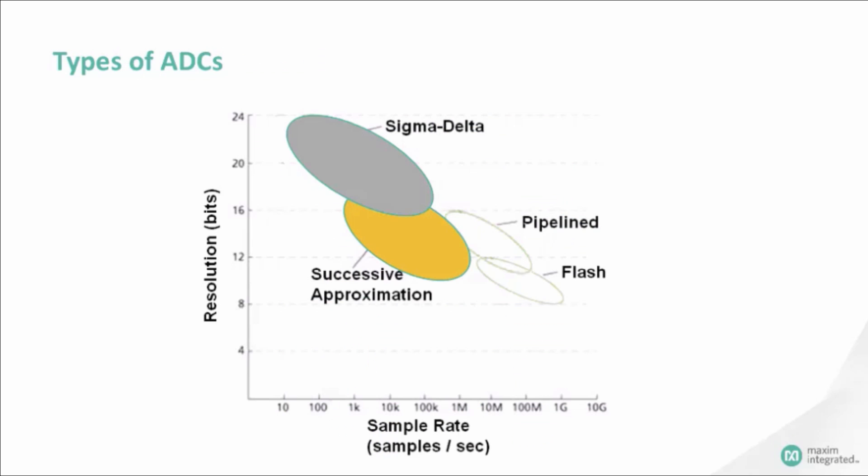With trade-offs varying between speed, resolution, and power consumption. The flash architecture is ultra-high speed, but with high power consumption.